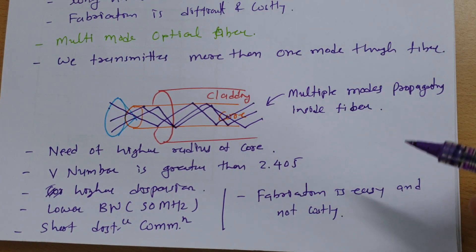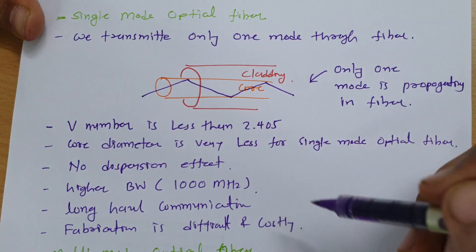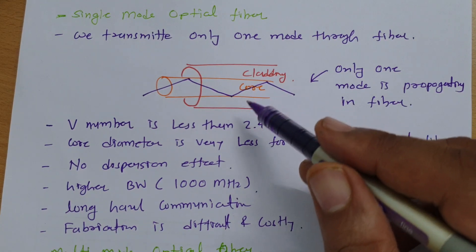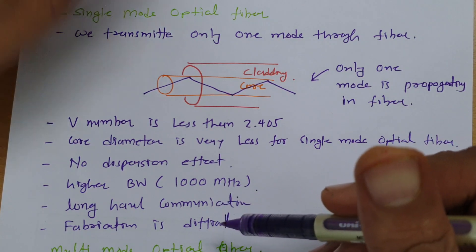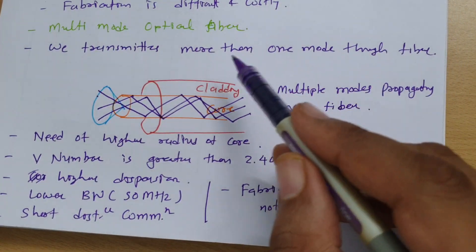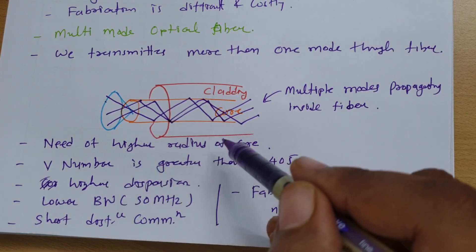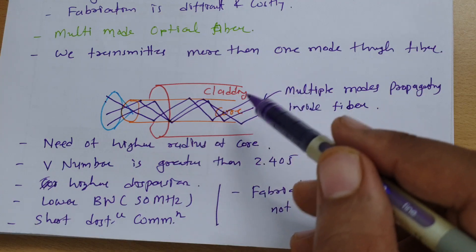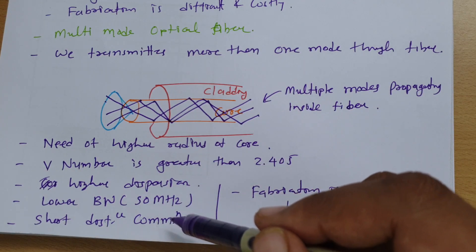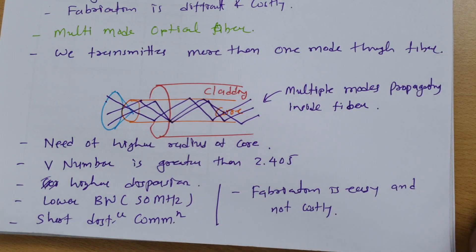To summarize: in single mode optical fiber, only one mode propagates, the V number is less than 2.405, core diameter is very small, there is no dispersion effect, bandwidth is high, it is used for long-distance communication, and fabrication is costly and difficult. For multi-mode optical fiber, more than one mode propagates, requiring a higher core radius, V number is greater than 2.405, dispersion is high, bandwidth is low at around 50 megahertz, it is used for short-distance communication, and fabrication is easy and not costly.